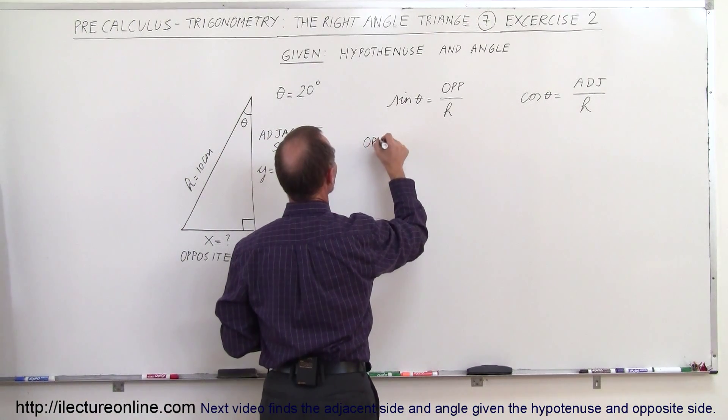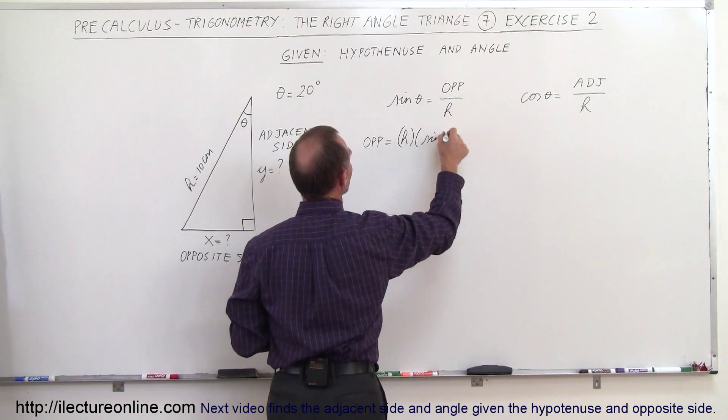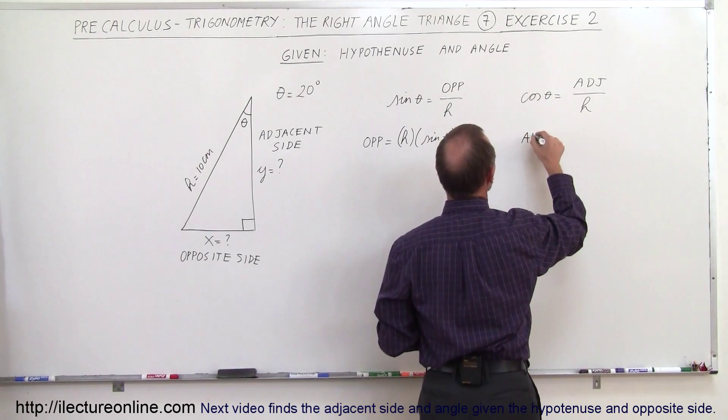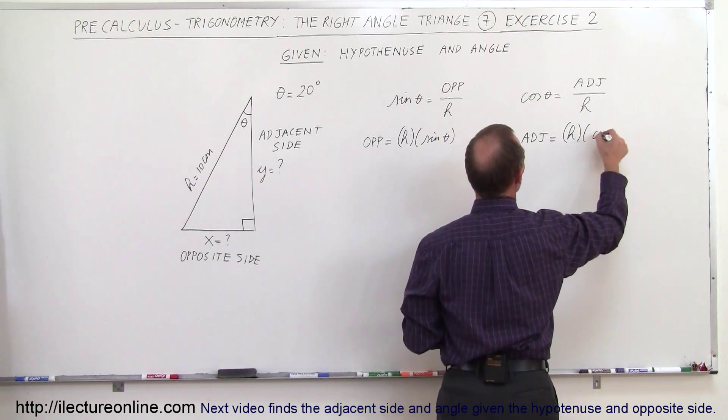So here we can write that the opposite side is equal to the hypotenuse H times the sine of theta and in this case we can say that the adjacent side is equal to the hypotenuse H times the cosine of theta.